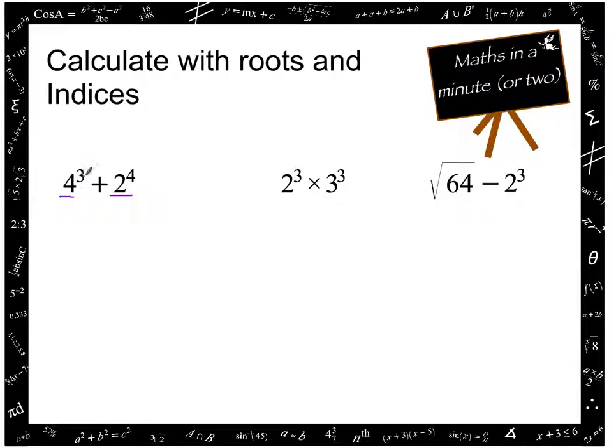We have 4 to the power of 3 and we have 2 to the power of 4. So therefore the only way to do this is to write them out in full. So 4 times 4 times 4. That's what 4 to the 3 means and we are adding 2 to the power of 4 which means 2 times 2 times 2 times 2.